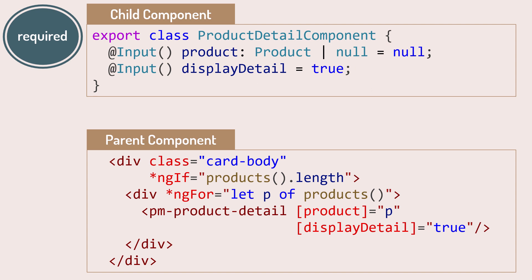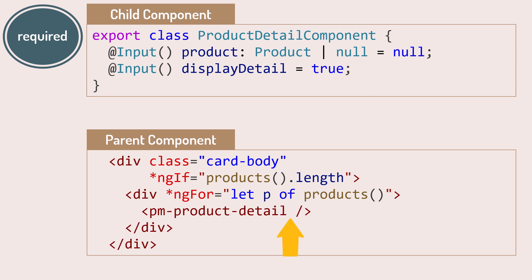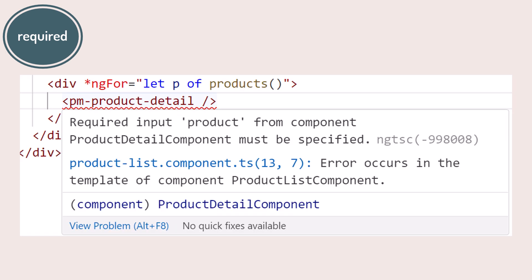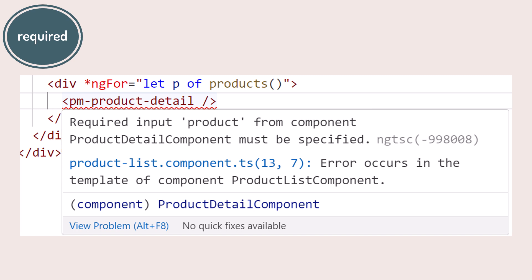Let's move on to the required option. What happens if the parent component forgets to bind to the child component's input properties? There won't be an error — the child component will just use its initial values. For display detail, that's probably okay since it's initialized to true, but the product property is initialized to null, so nothing will display. You can use the required option to mark an important input property, requiring the parent to provide a value. If it does not, Angular generates an error: 'Required input product from component product detail component must be specified.' That way our child component won't silently fail.